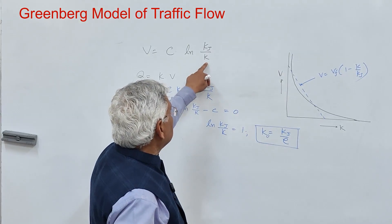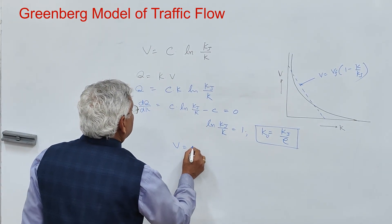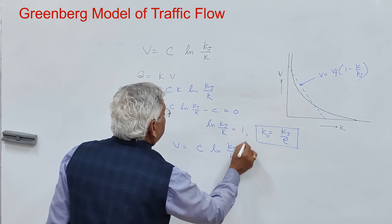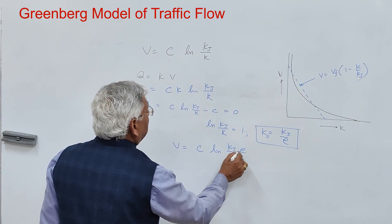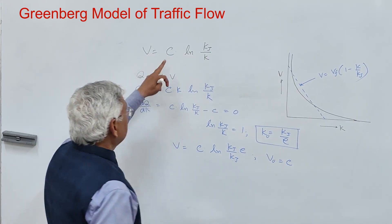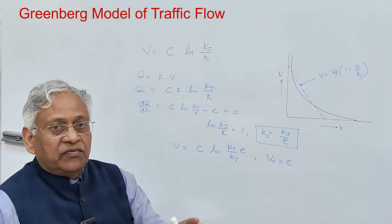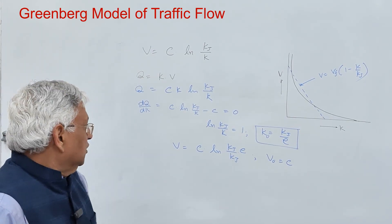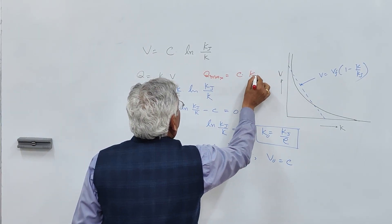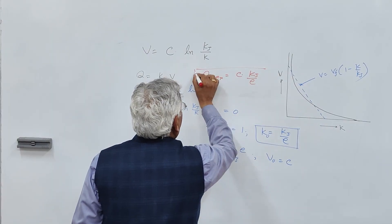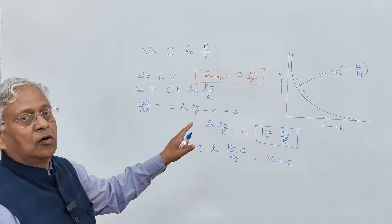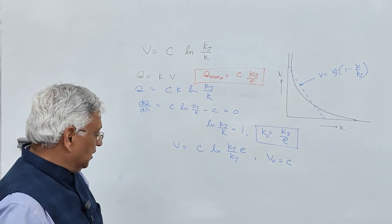Substituting back gives the optimum speed: c times ln(kj divided by kj times e). Since kj/kj equals 1, ln(e) equals 1, so the optimum speed equals c. Thus the coefficient c indicates the speed of the traffic stream at capacity, and maximum flow q_max equals c times kj divided by e — that is the capacity of the road.